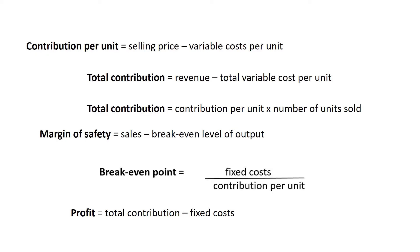Contribution per unit is selling price minus variable cost per unit. Total contribution is revenue minus total variable cost, or alternatively contribution per unit times the number of units sold. The margin of safety is sales minus break-even level of output. The break-even point is fixed cost divided by contribution per unit, and profit is total contribution minus fixed cost.